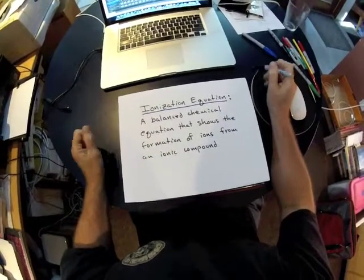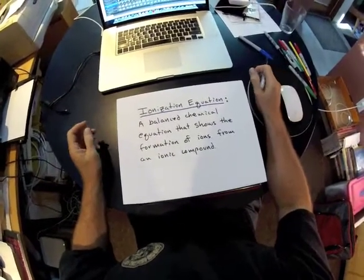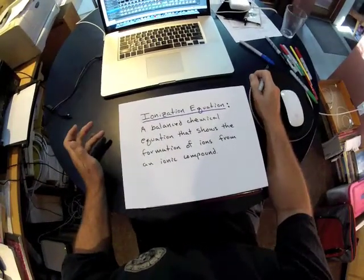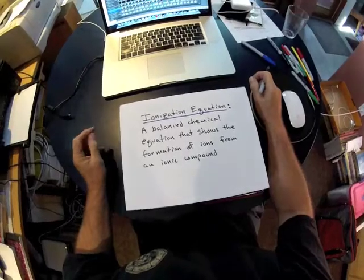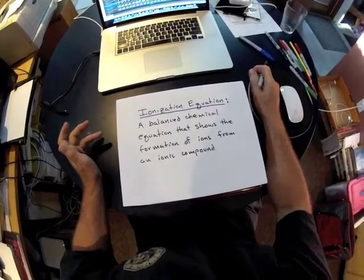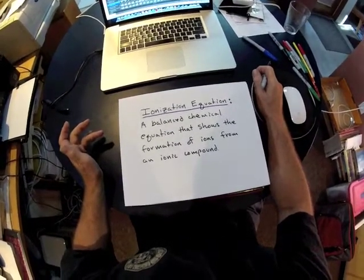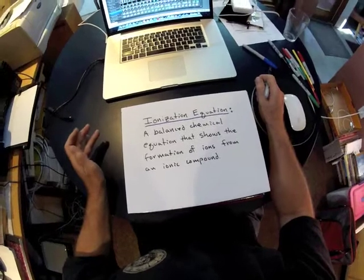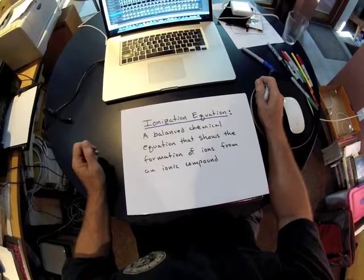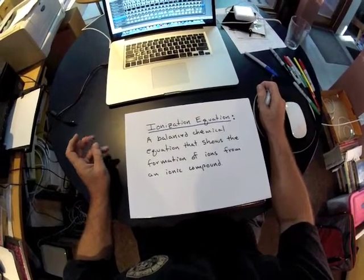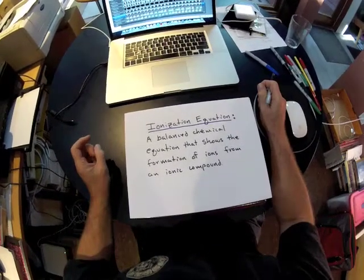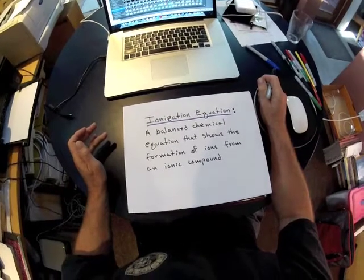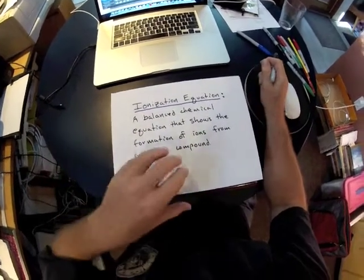Welcome to the first video in the series on writing ionization equations, reverse ionization equations, and precipitation equations. An ionization equation is a balanced chemical equation that shows the formation of ions from an ionic compound.